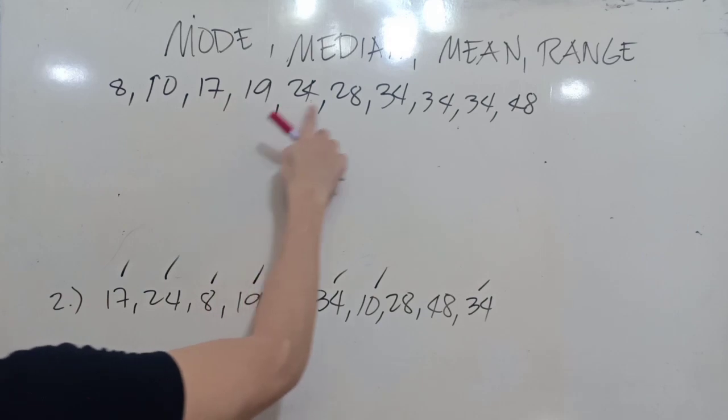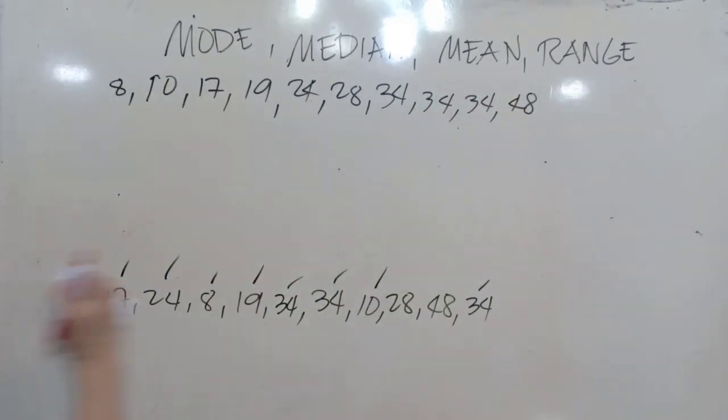We have the first one is 8, followed by 10, followed by 17, 18, and then 19, and then 24, and then 28, and 34 three times, and then 48. Now we have here 1, 2, 3, 4, 5, 6, 7, 8, 9, 10.